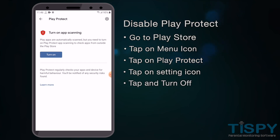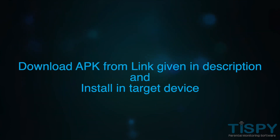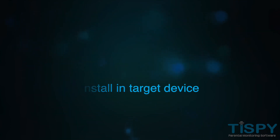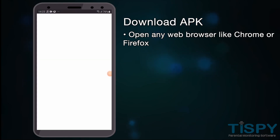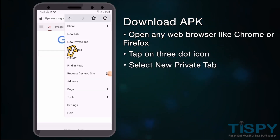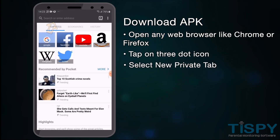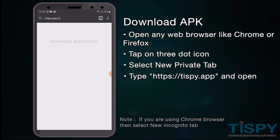Next, download the APK from the link provided in the description and install it on the target device. To download the APK, open any web browser such as Chrome or Firefox, tap on the three-dot icon, select New Private Tab, type TISP.app, and open it.